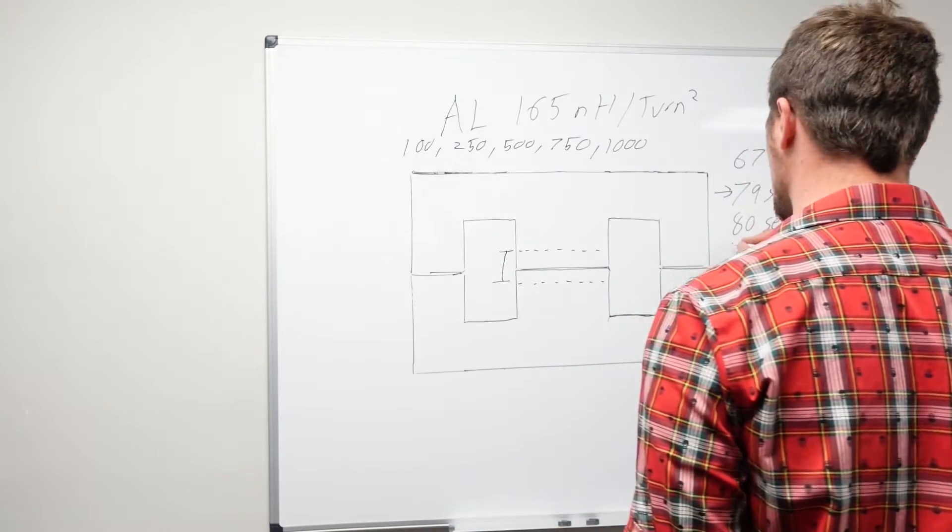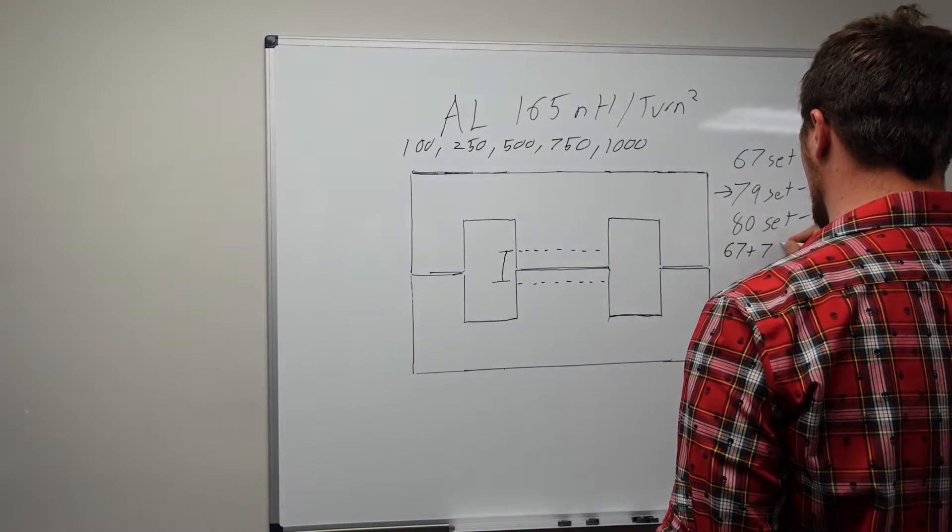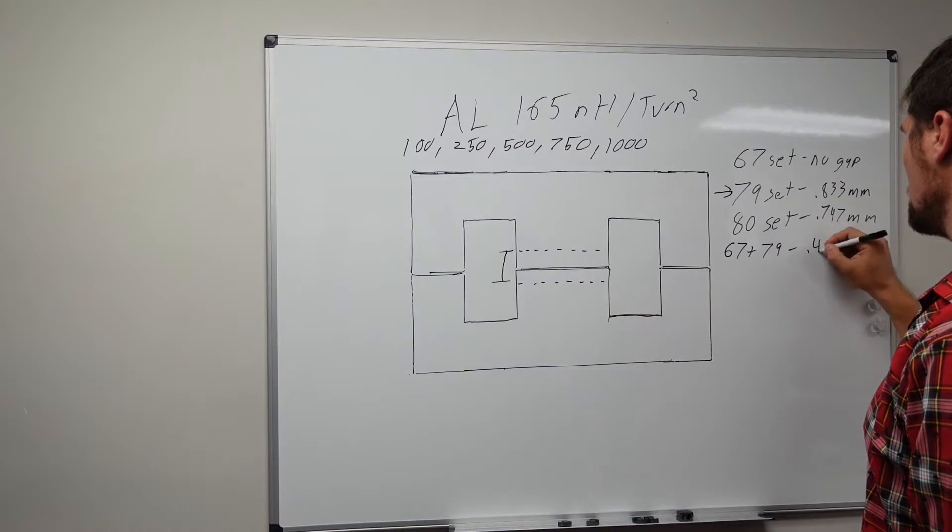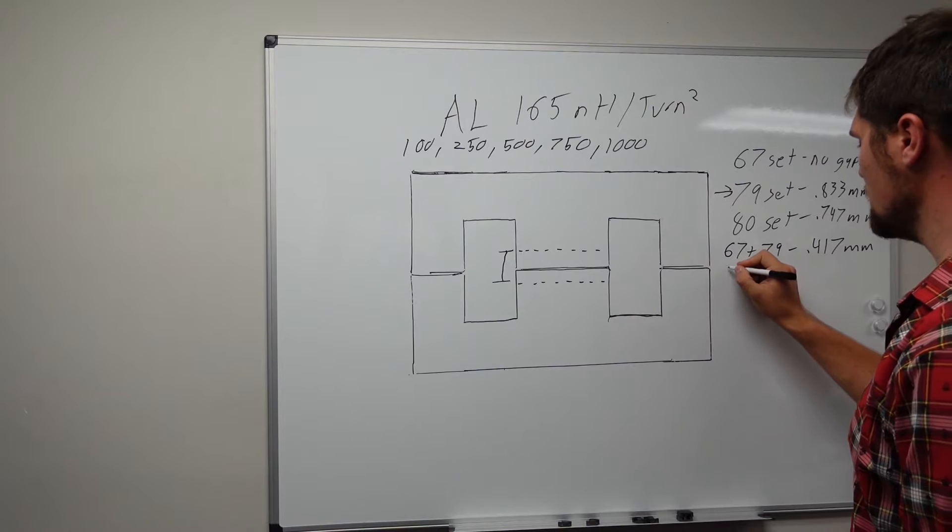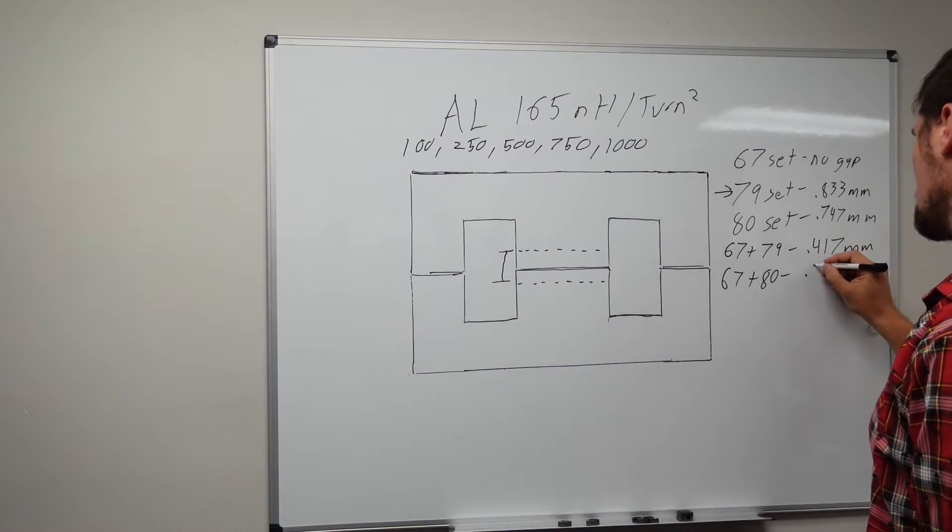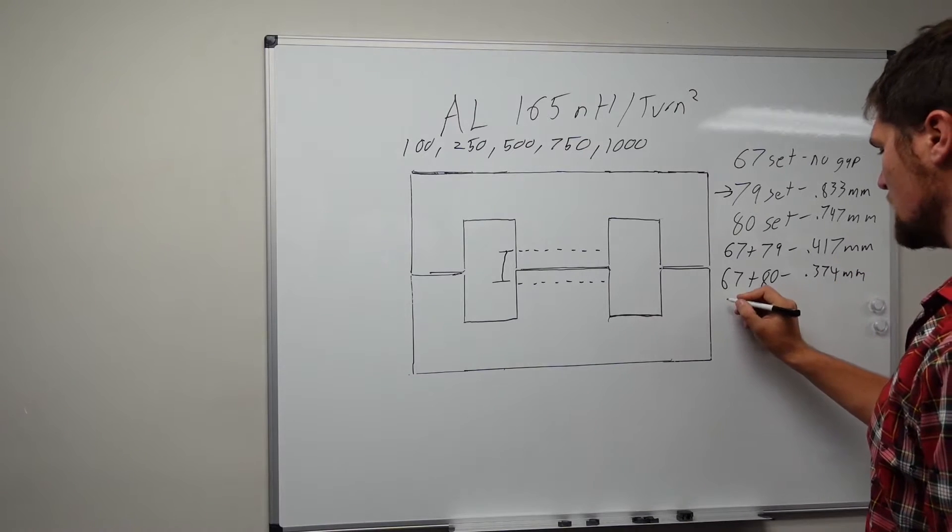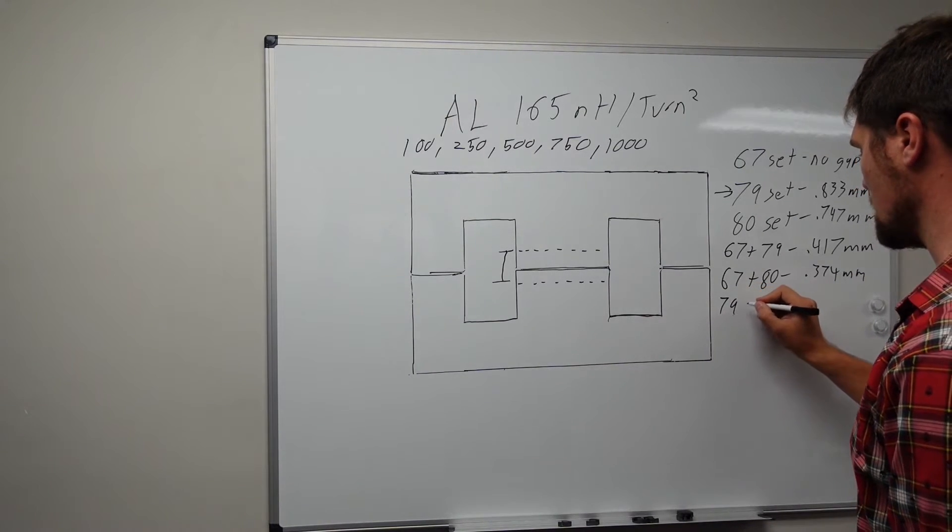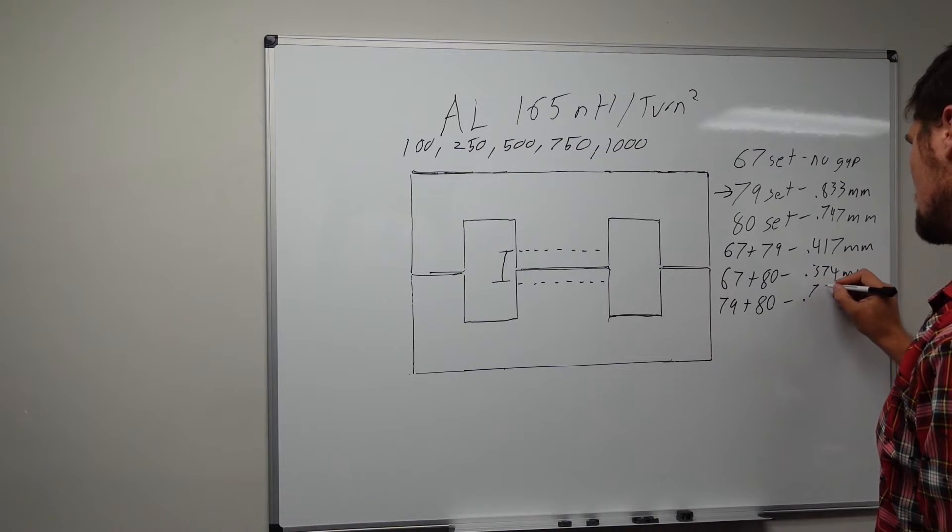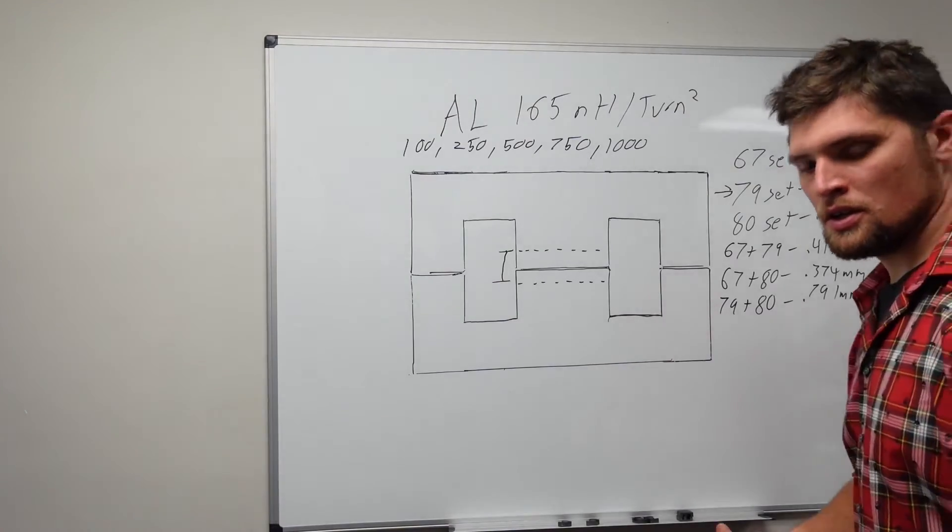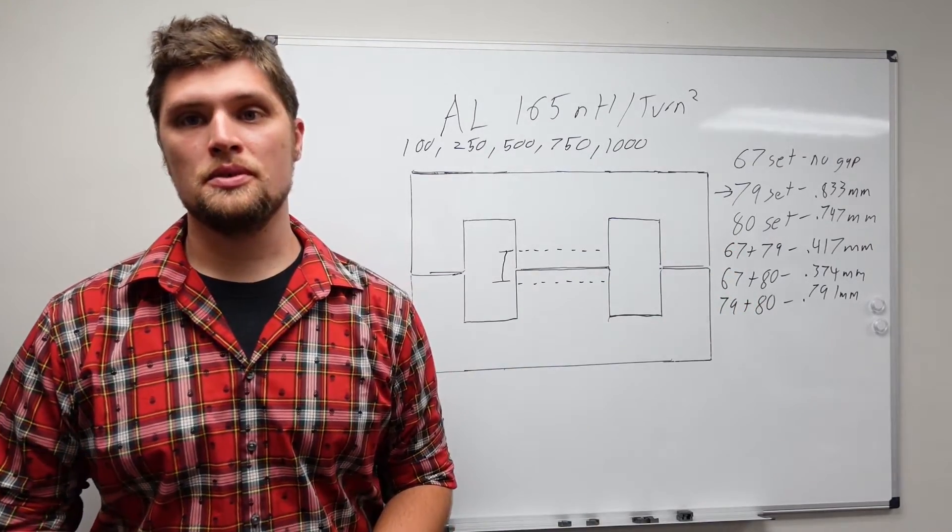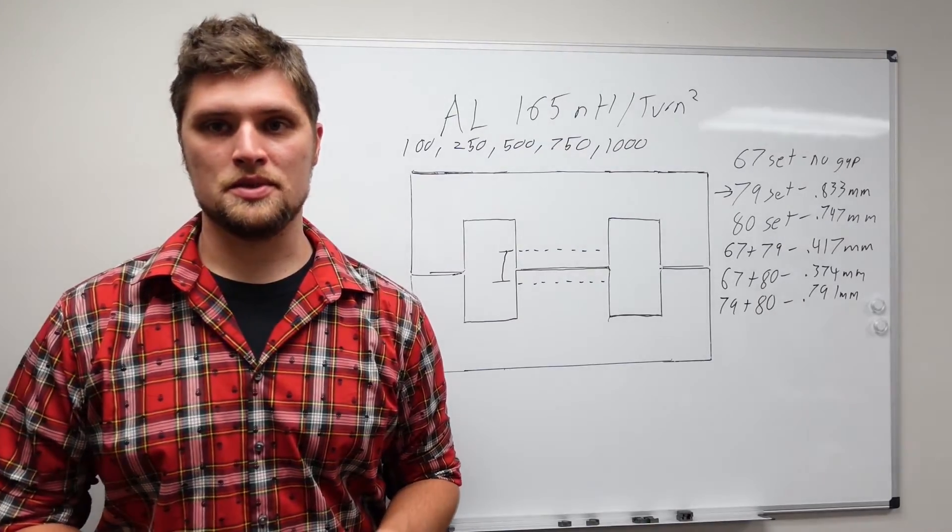So let's see, if we take our 67 material and mix it with a 79 material core, we're going to need a gap length of 0.417 millimeters. If we take 67 and mix it with 80 material, we're going to need a gap length of 0.374 millimeters. And then finally, let's mix 79 and 80 material together. And that's going to give us a gap length of 0.791 millimeters. So let's see, we'll do the same testing on these three combinations and let's take a look at that and see what we wind up with.